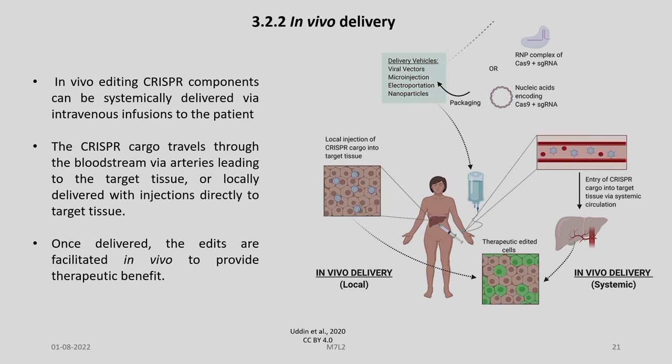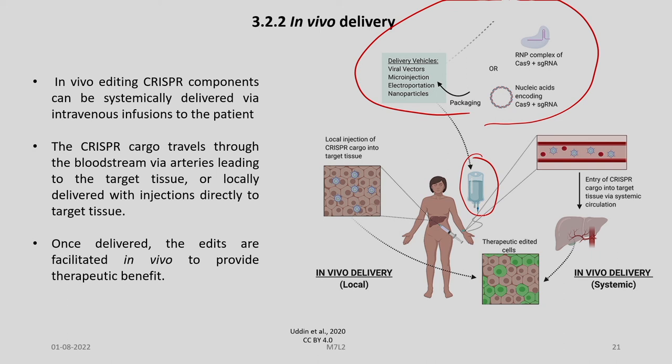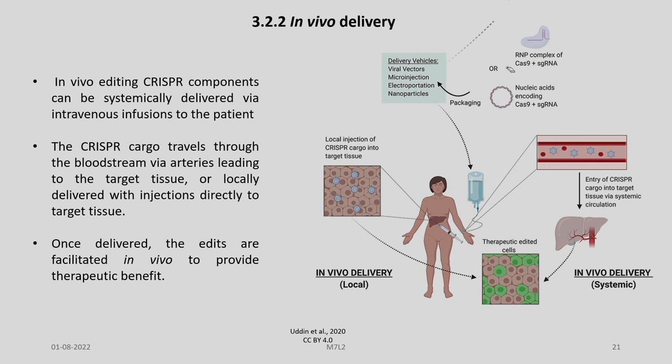In vivo delivery, as the name suggests, is direct delivery to the body. The components can be systematically delivered via intravenous infusion to the patient. The CRISPR cargo travels through the bloodstream via arteries leading to the target tissue, or is locally delivered with injections directly to the target tissue. Once delivered, the edits are facilitated in vivo to produce therapeutic effect.